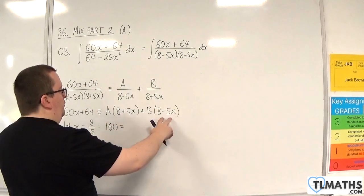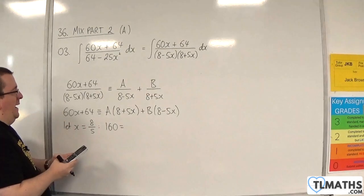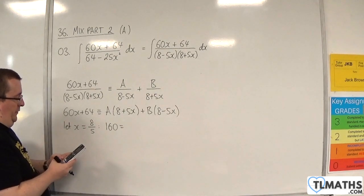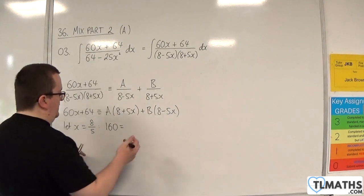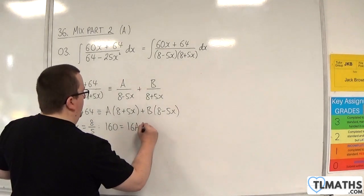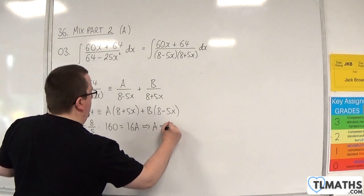On the right hand side, the 8 fifths will knock out that bracket. So we've got 8 plus 5 lots of 8 fifths, which is 16. So 16A. And so that means that A must be 10.